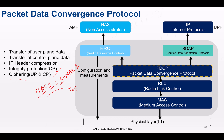PDCP is also responsible for user data transfer — reliably and efficiently transmitting user data IP packets over the radio interface. PDCP also handles the RRC part, which is why PDCP has connections to both RRC for the control plane and SDAP for the user plane.